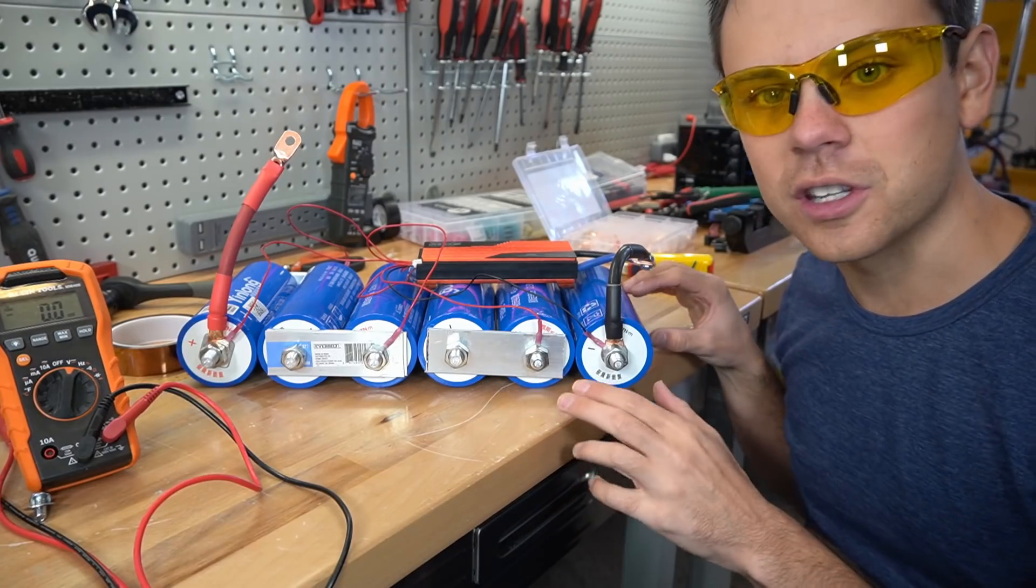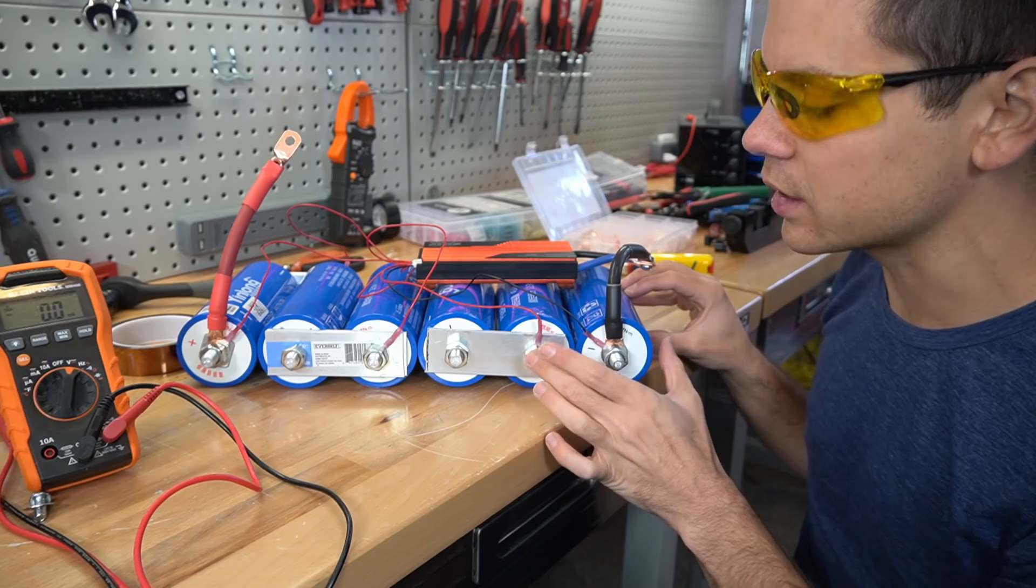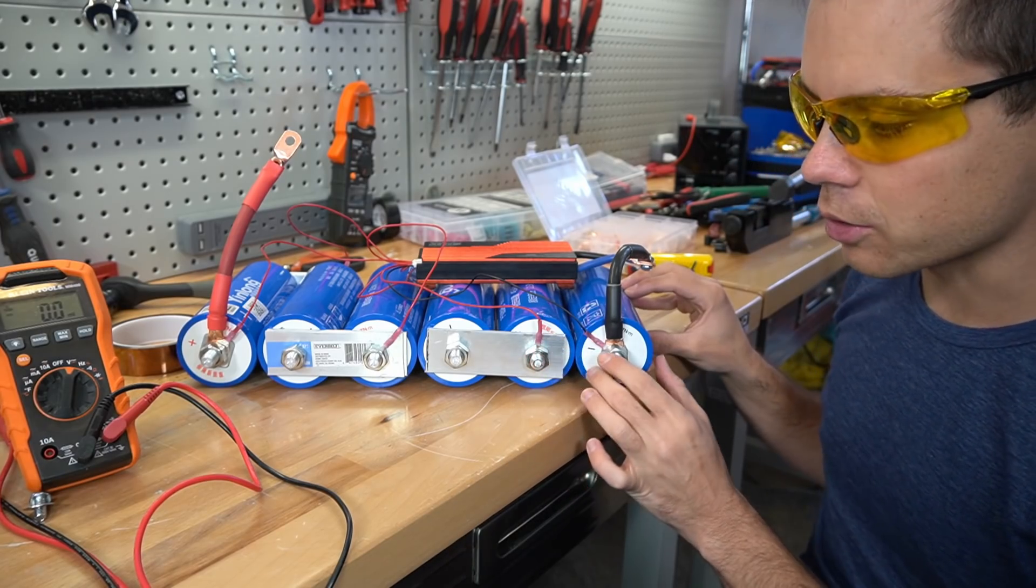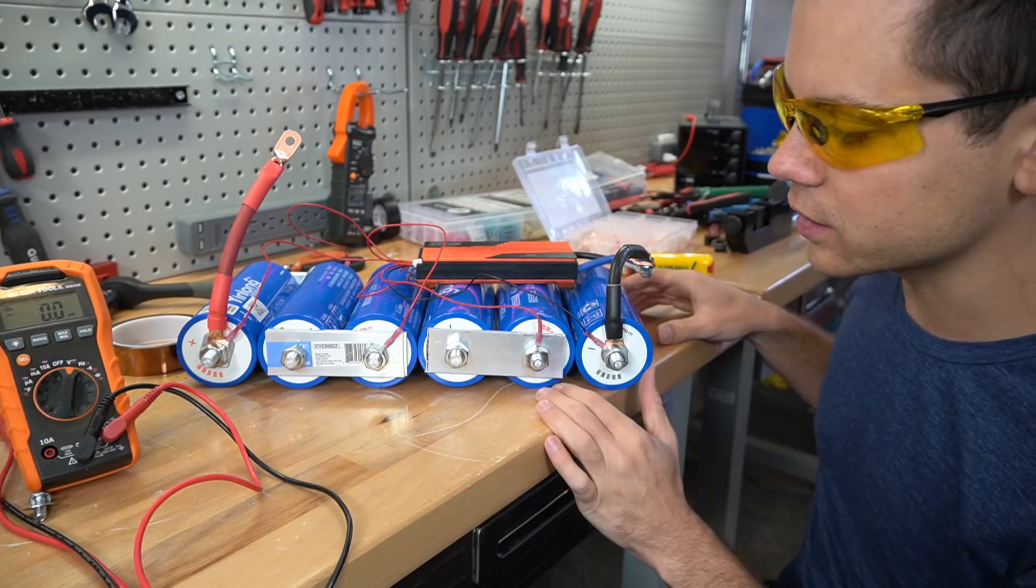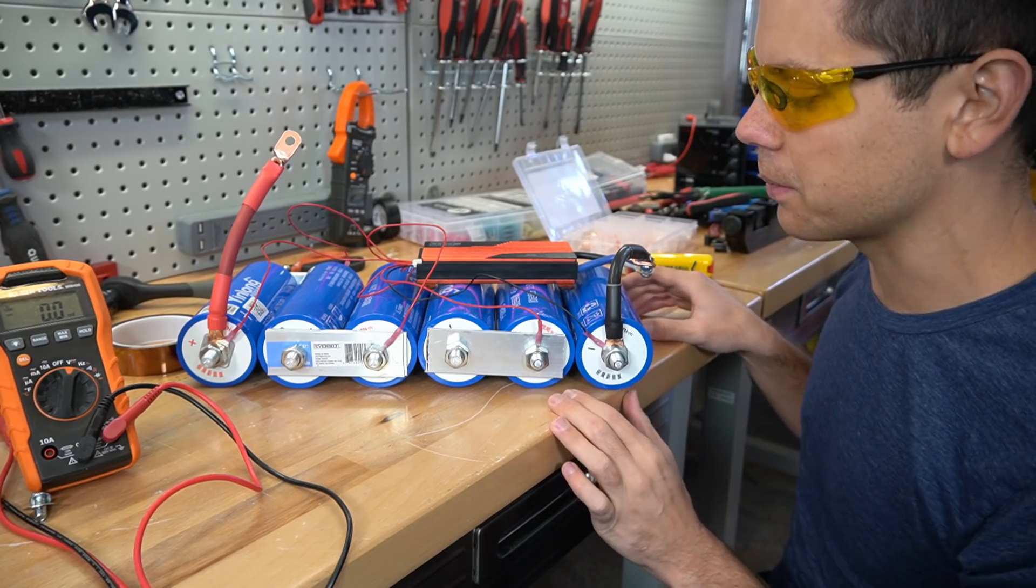And notice how large this pack is. The volumetric density of this chemistry is pretty horrific. So I'm going to have to put this on a piece of wood so I can move it over to my capacity tester.